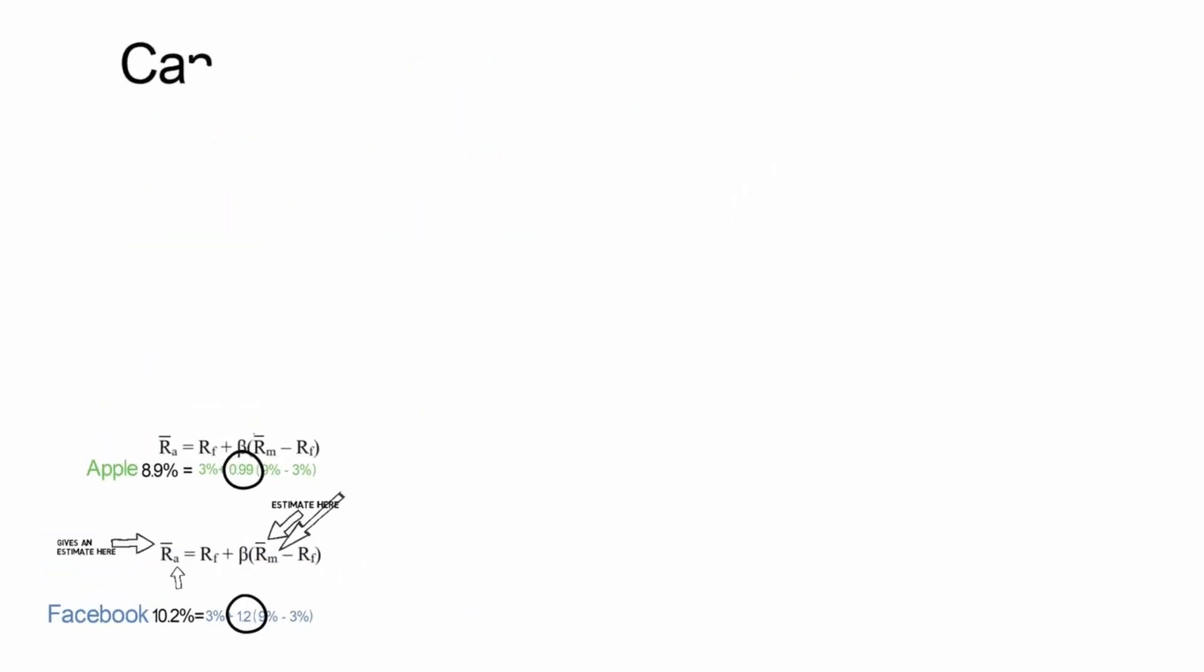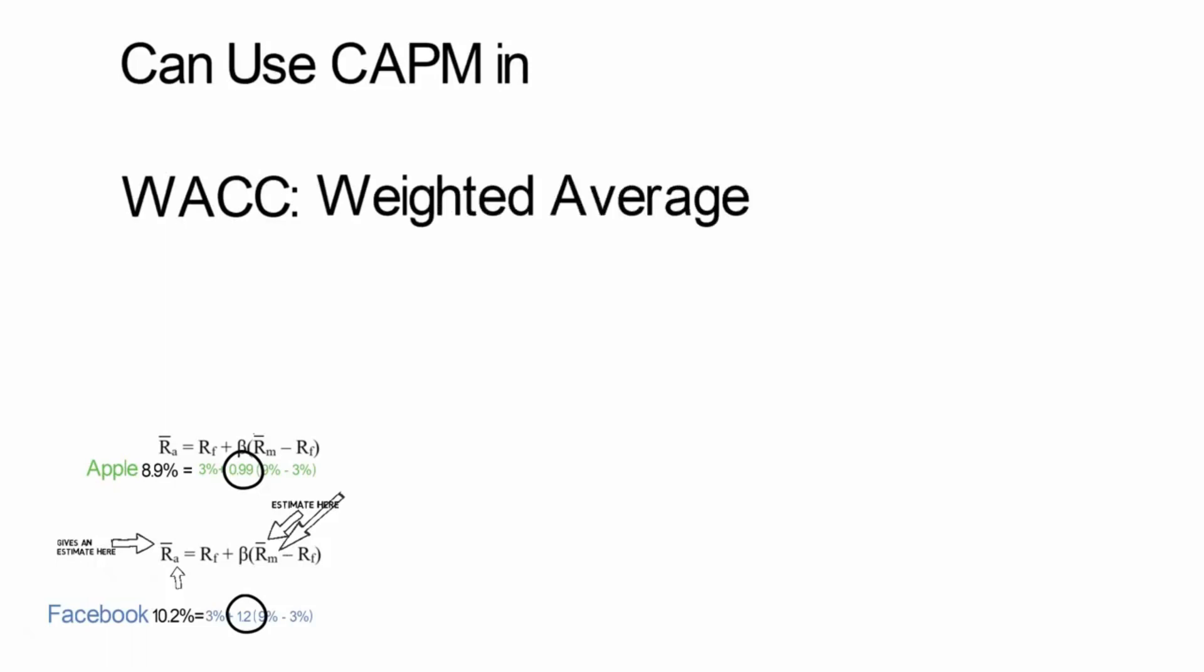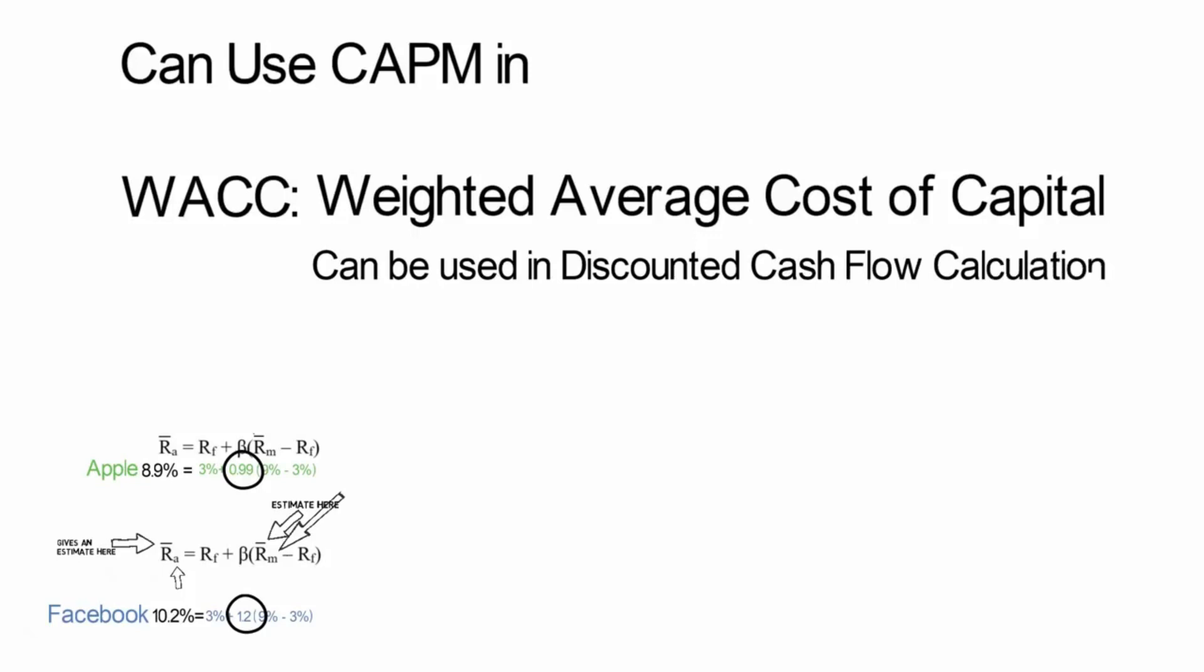So how can this be used? Well, one way you can use CAPM is to use it in calculating the WACC of a company. WACC is short for weighted average cost of capital.